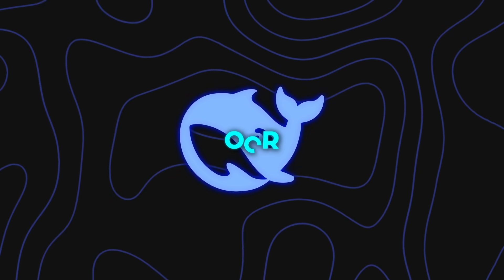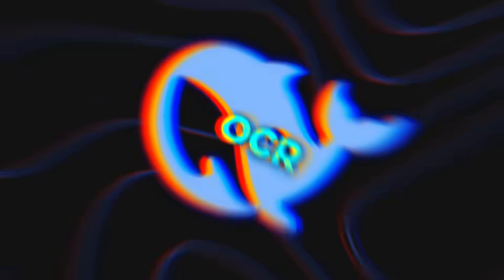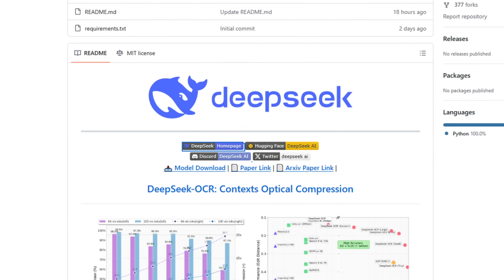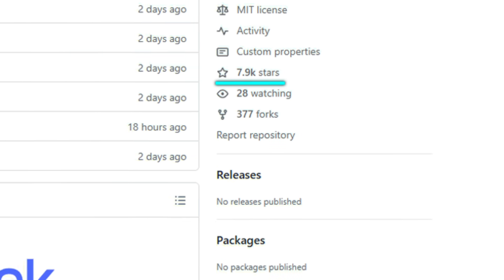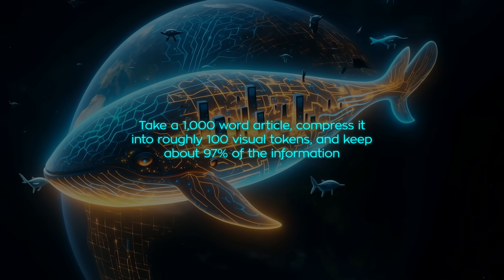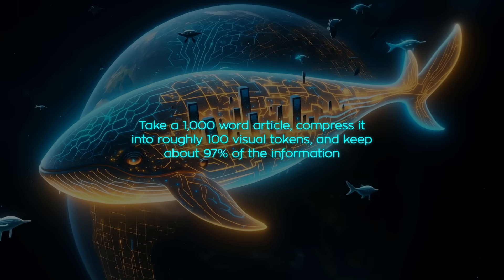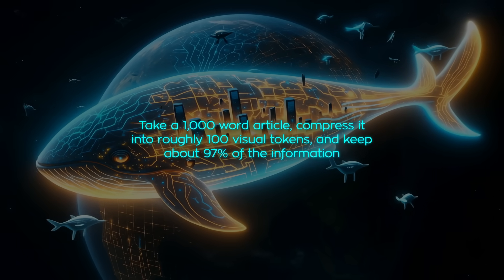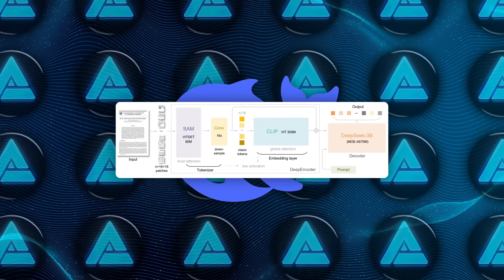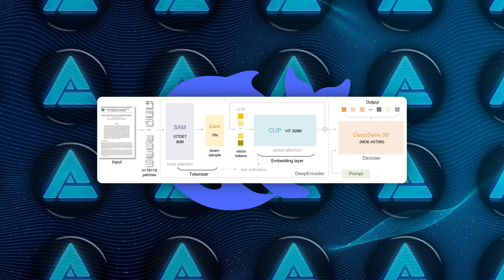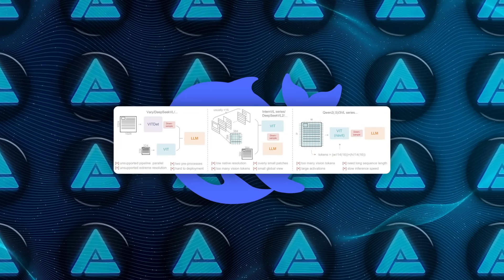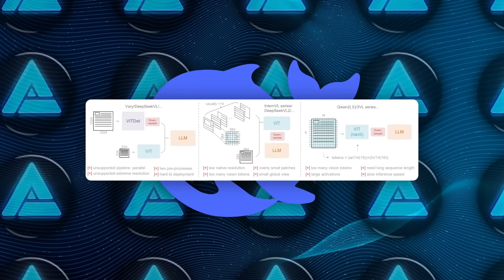Let's kick off with DeepSeek OCR because the buzz was instant. The model dropped open source and racked up well over 4,000 GitHub stars overnight. The headline is bold and very specific: take a thousand-word article, compress it into roughly 100 visual tokens, and keep about 97% of the information. That flips the usual long-context math. Instead of throwing piles of text at a tokenizer and paying the token tax, they render text as images, run it through a vision encoder, and hand the LLM a compact stream of vision tokens.